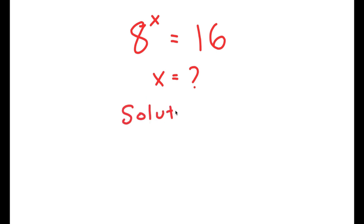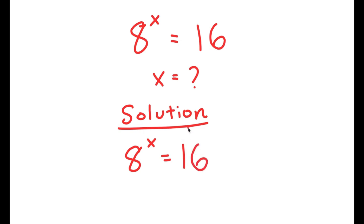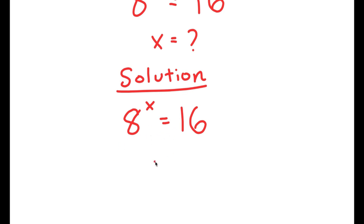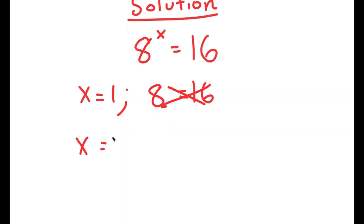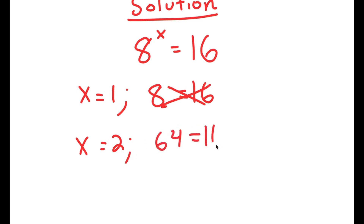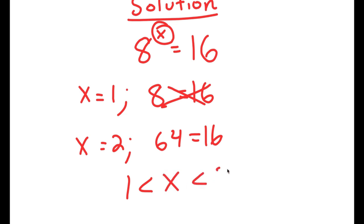For my solution, I'm going to start by rewriting my equation: 8 to the power of x is equal to 16. Let's just inspect this problem quickly. If I plug in x equals 1, I get 8 to the power of 1 equals 8, so I get 8 equals 16, which is false. If I plug in x equals 2, I get 8 squared equals 64, so 64 equals 16. Notice there's a big gap between 8 and 64, so x is not going to be a whole number — it's going to be a decimal somewhere between 1 and 2. So x is greater than 1 but less than 2.